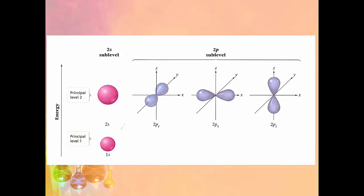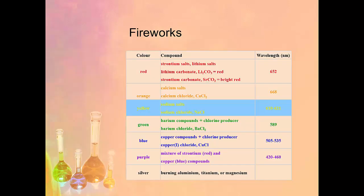Here's another example of what your s and p orbitals look like, with principal level 1 and principal level 2, and the 2p sublevel also on the second energy level. As a practical example, fireworks use different salts to get different colors based on wavelength. When energy is put into these elements, the electrons are excited to a higher energy level, then they relax and release light of a particular wavelength, giving us the different colors we see in fireworks and pyrotechnics.